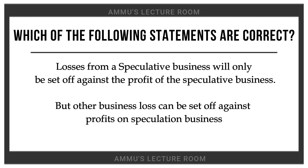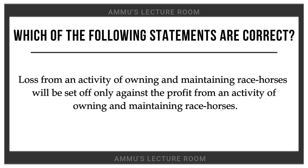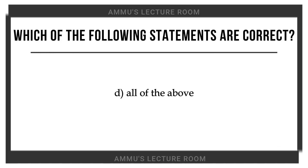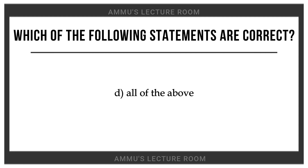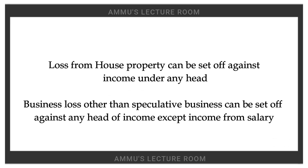The losses of speculative business will be adjusted towards the profit of speculative business. Loss from the activity of owning and maintaining racehorses will be set off only against the profit from an activity of owning and maintaining racehorses — that's also a correct statement. Therefore, option D — all of the above — is correct.